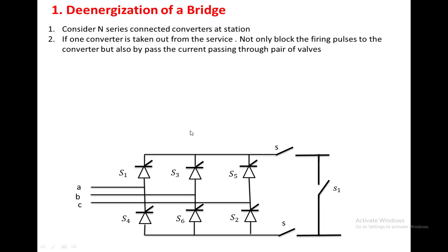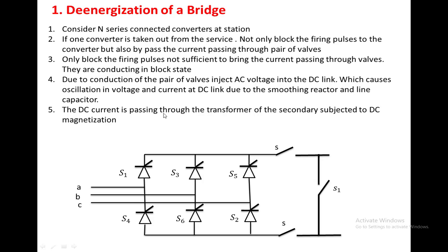Here we have taken one converter, and converters are connected in series. If you want to remove this converter, you should not apply any pulses to these valves — that is called blocking. During blocking, some amount of current is passing through the valves, so the AC voltage will be reflected on the DC side, producing oscillations due to the smoothing inductor and capacitance of the DC link. Moreover, the secondary winding of the transformer carrying DC current will cause DC demagnetization. So not only do we block the firing pulses to the valves, we also have to bypass the current passing through the conducting valves.